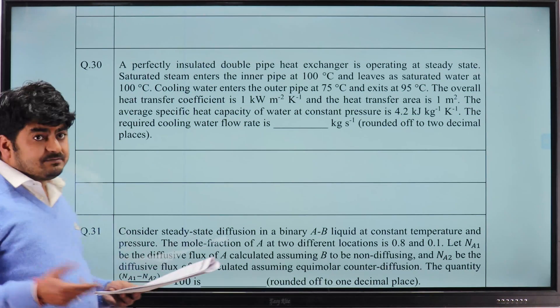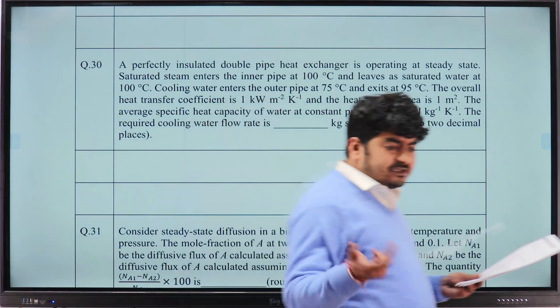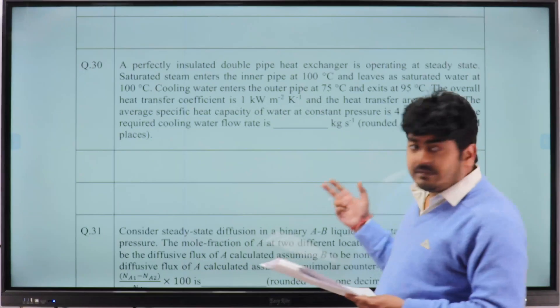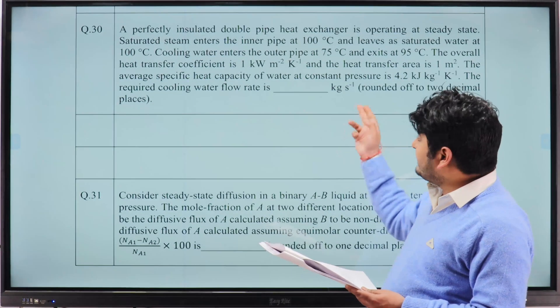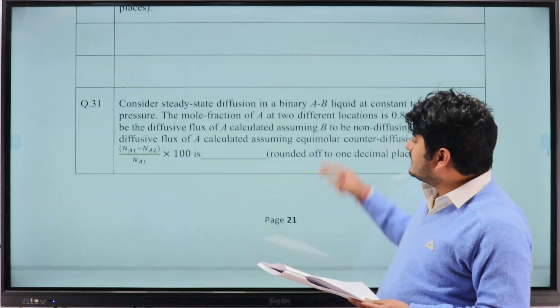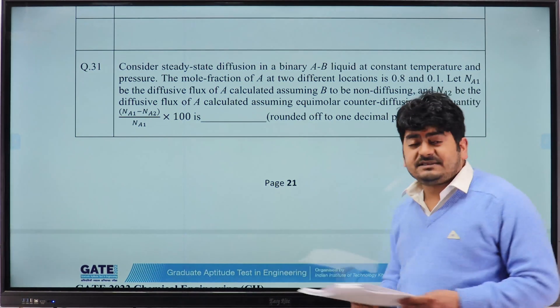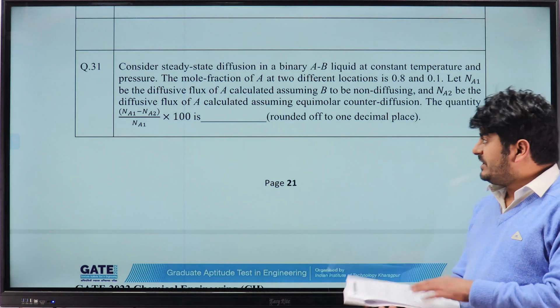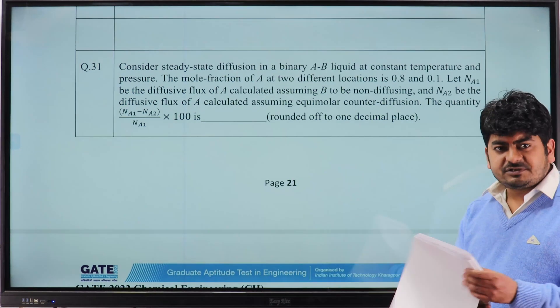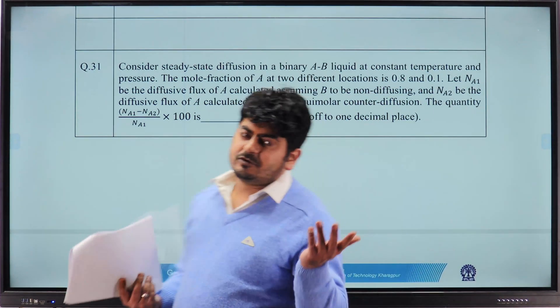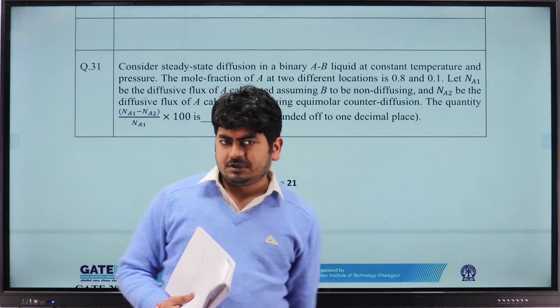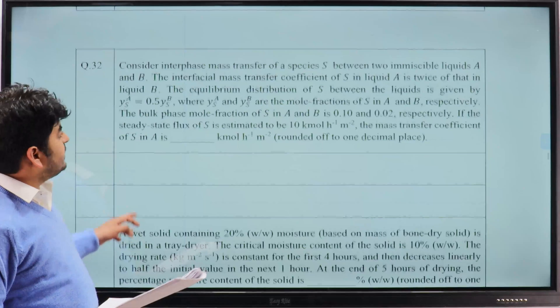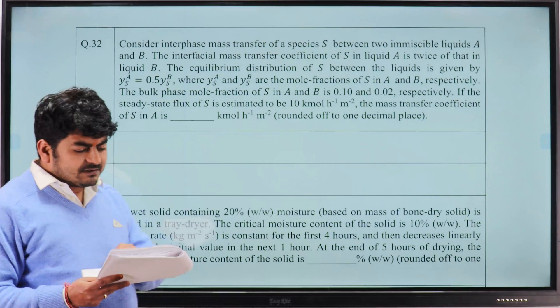Double pipe heat exchanger, which has become quite common in GATE exam. If you see last 10 previous year papers, at least three, four times they have asked this question from double pipe heat exchanger. 0.15 is the answer. Simple question from energy balance, Question 31. From diffusion mass transfer, easy one again, correct answer is 53.45 percent. We have uploaded the solutions of most of the questions on our Facebook page. You can visit our Facebook page www.facebook.com/thegatecoach, and tomorrow we will discuss live with all of you.